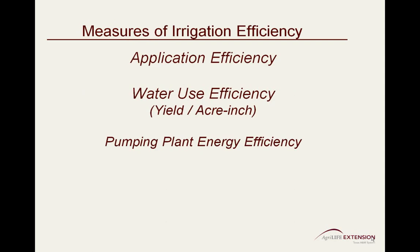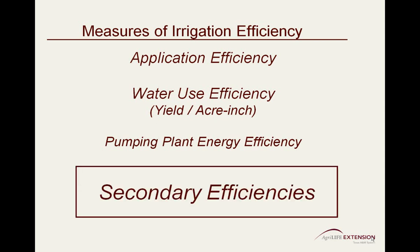Specifically relating to irrigation, we commonly refer to application efficiency to qualify the merits of irrigation systems. We use water use efficiency to reference crop yield abilities with relation to water, and pumping plant efficiency to evaluate the conversion of energy to usable water. As important as all of these individual efficiencies are, they are only secondary efficiencies.